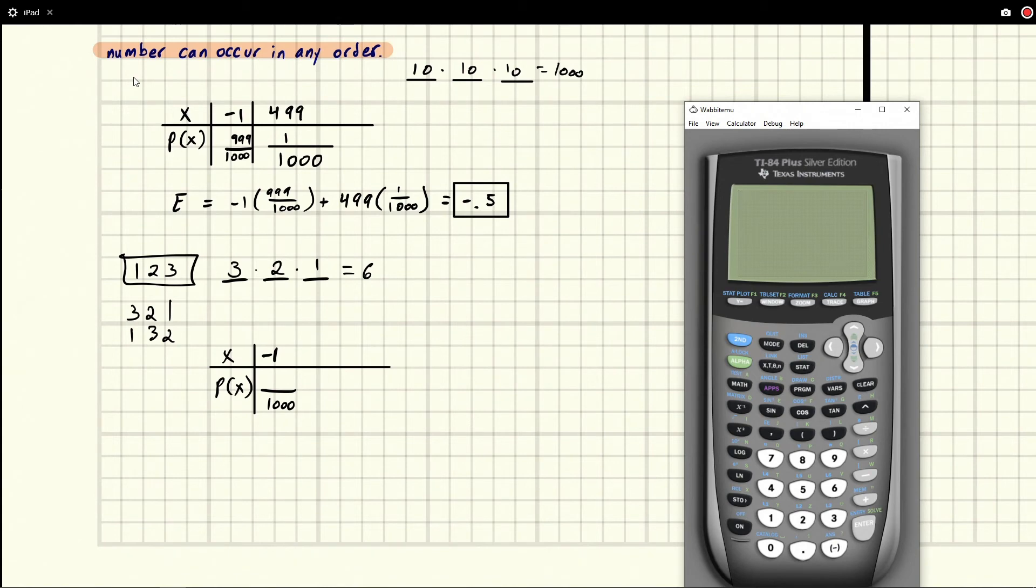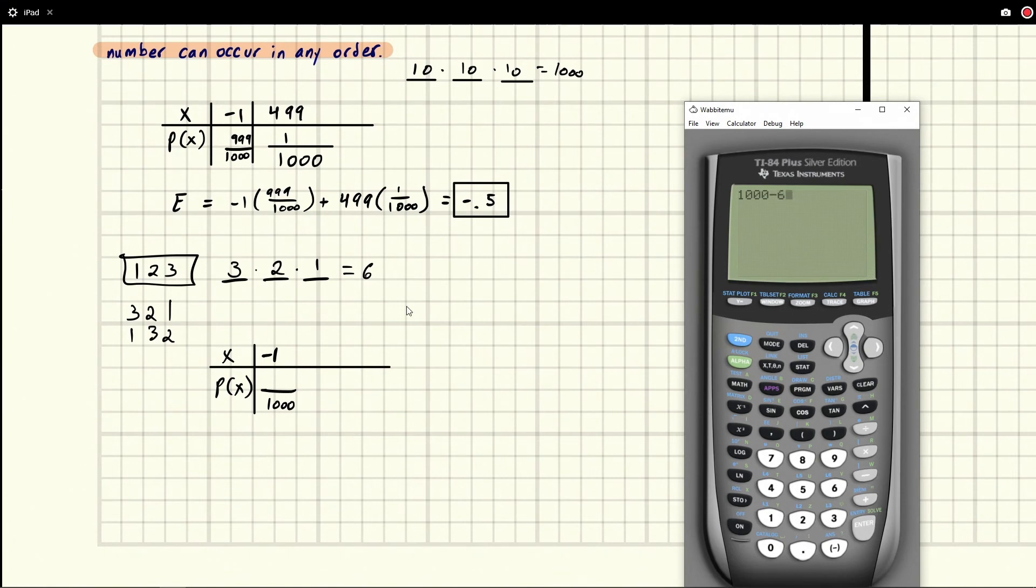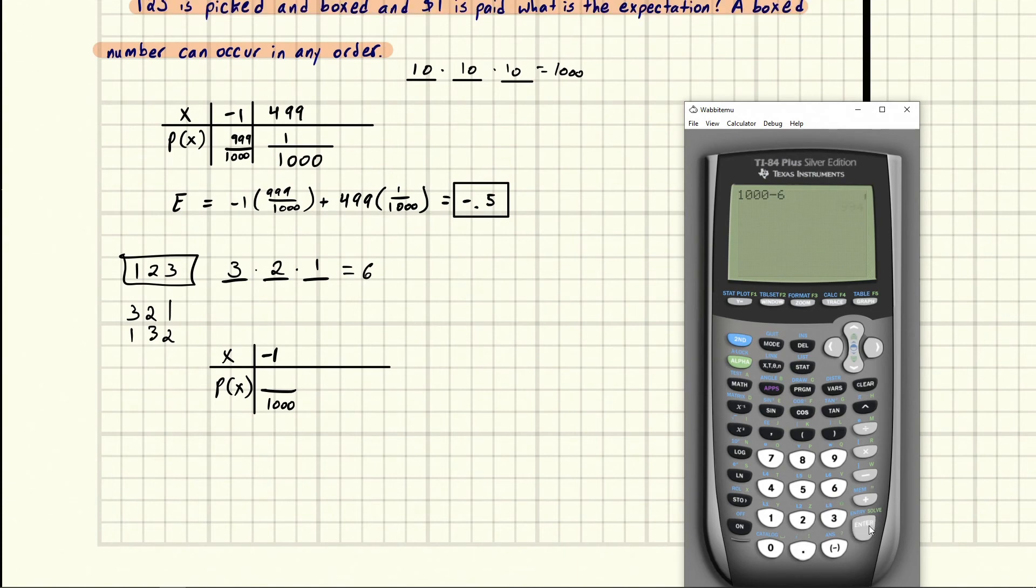So if we take 1000 ways to make numbers, and we take off the winning ways, which are six ways to win, right, six ways for our numbers to occur, then we get 994, 994.